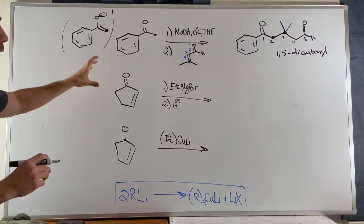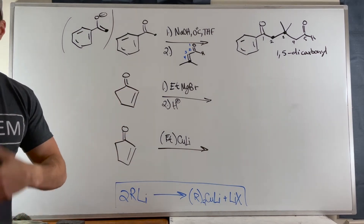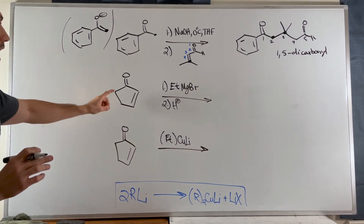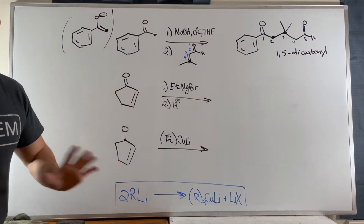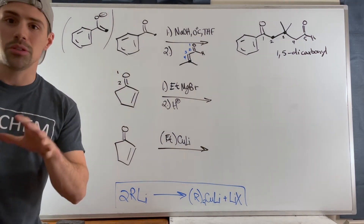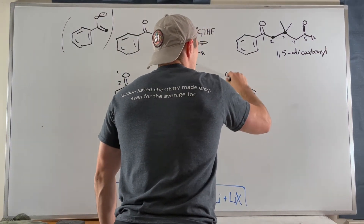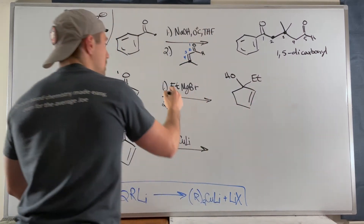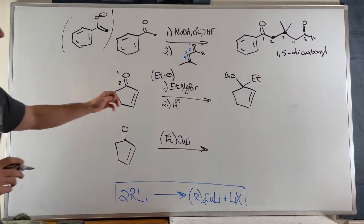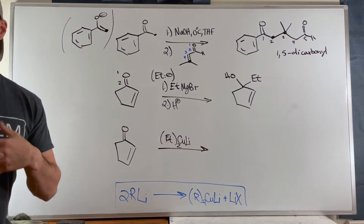Now let's see what happens with a hard nucleophile on an enone. Ignoring stereochemistry, a Grignard reagent is a hard nucleophile that prefers 1,2-addition — exactly what you learn when you first study Grignards. The ethyl carbanion (Et⁻) is super reactive, finds the carbonyl carbon, and attacks there — giving you the 1,2-addition product.